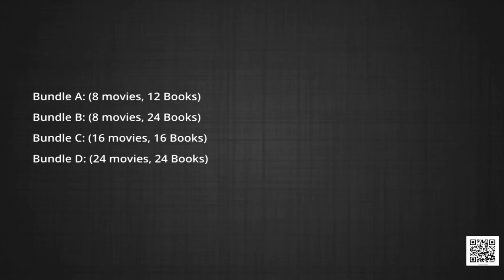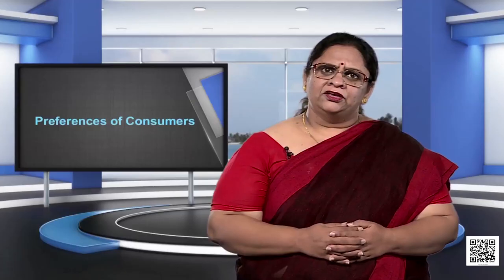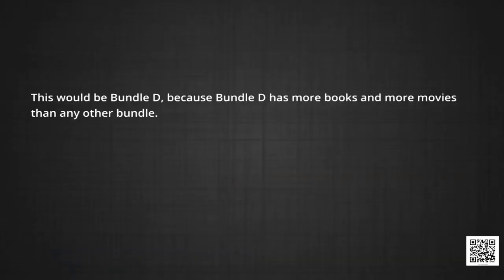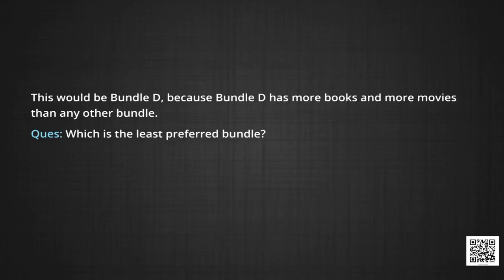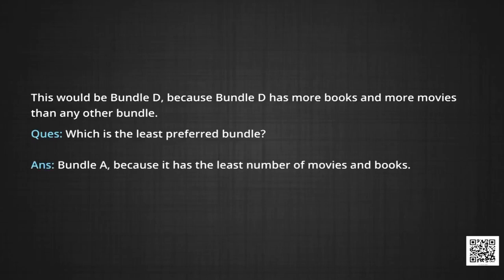Think about these bundles showing up on your virtual screen. Bundle A contains 8 movies and 12 books. Bundle B contains 8 movies and 24 books. Bundle C has 16 movies and 16 books. Bundle D has 24 movies and 24 books. Bundle B has more books and the same number of movies as bundle A, so naturally I choose bundle B over bundle A. Clearly, the most preferred bundle is D, because it has more books and more movies than any other bundle. The least preferred is bundle A, because it has the least number of movies and the least number of books of all four bundles.